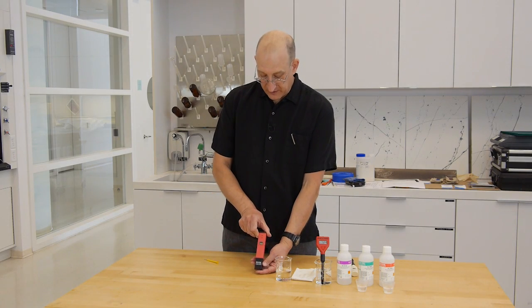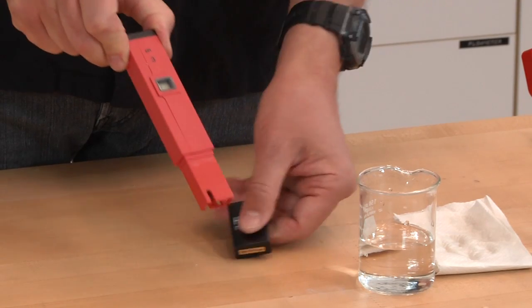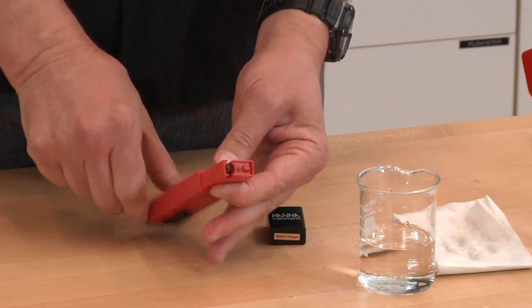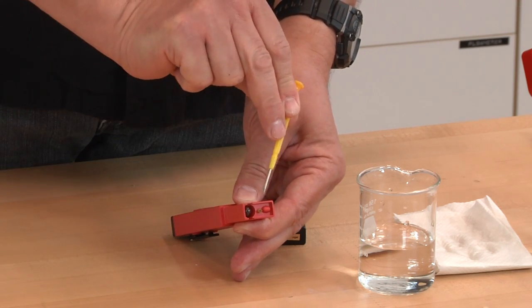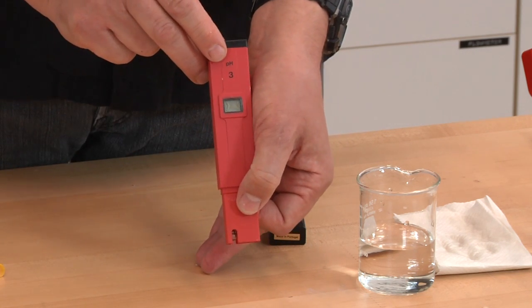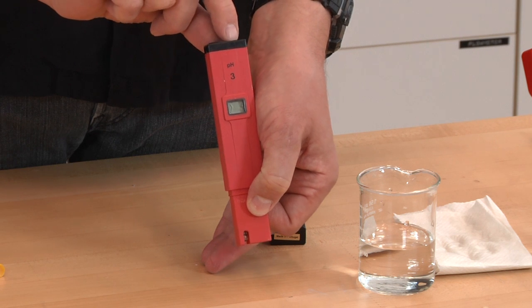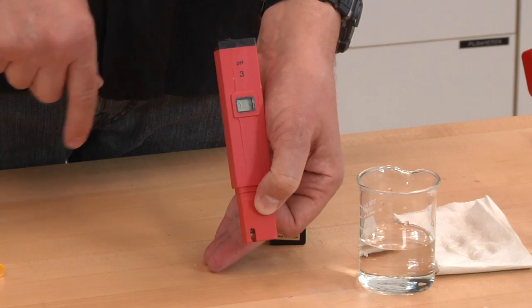This is another style of meter. This one, again, goes to two decimal points. The electrode isn't quite as small. Again, we have the glass measuring electrode and the little reference electrode. And this one is actually preprogrammed to calibrate. More or less like the Horiba meter, you push the on-off button and calibrate, go into different calibration modes.